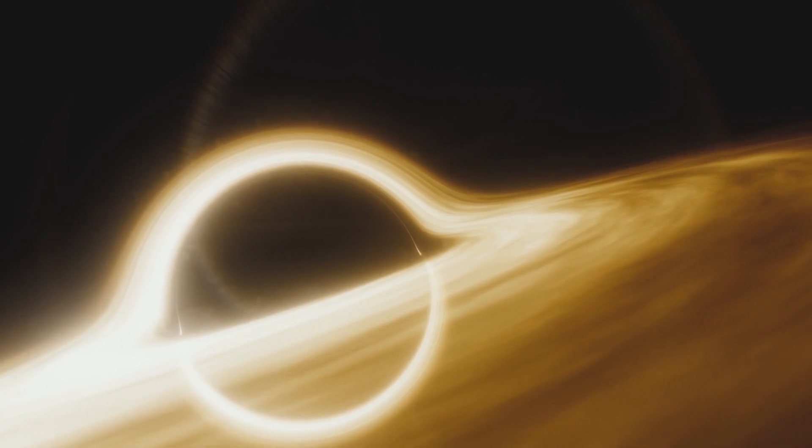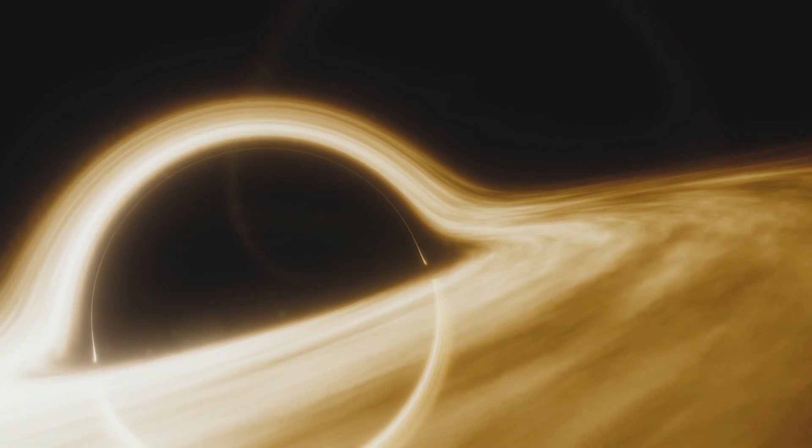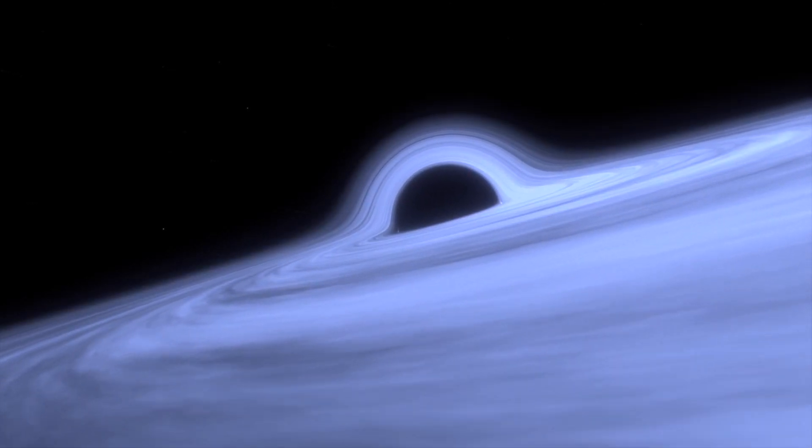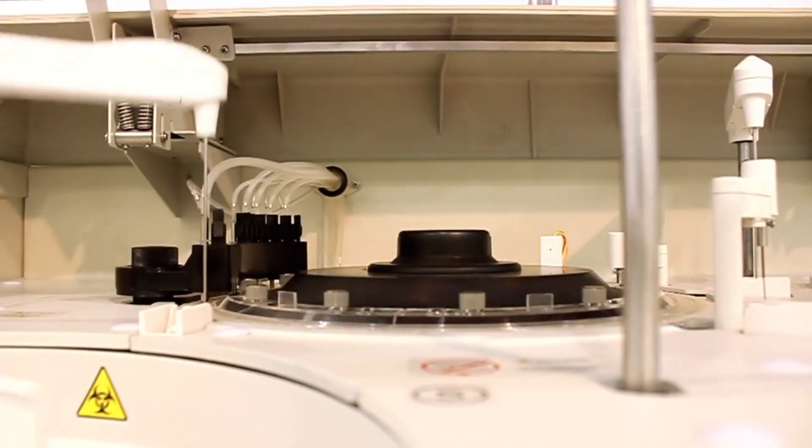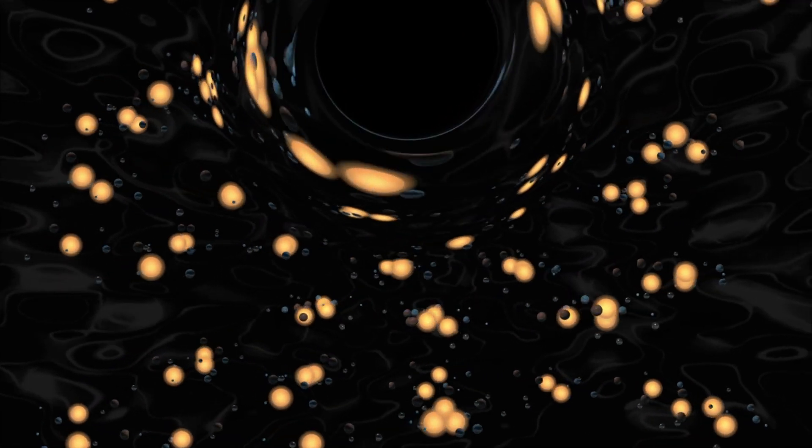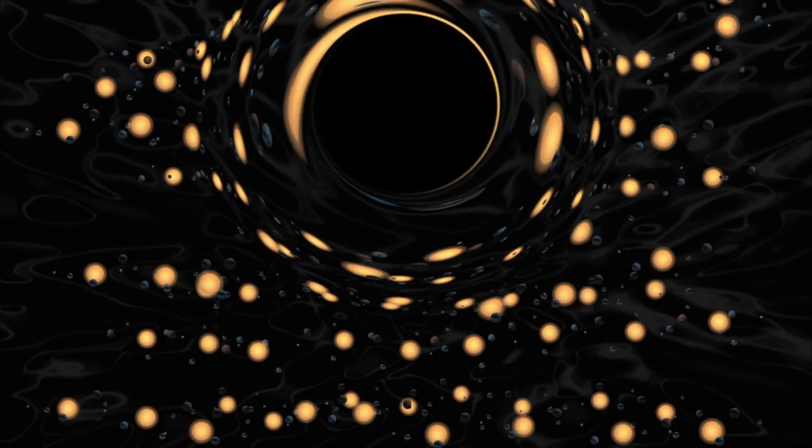The environment around the black hole in GRS 1915-105 is in a constant state of flux. The material from the companion star forms an accretion disk around the black hole. This has made GRS 1915-105 an excellent laboratory for studying accretion processes. GRS 1915-105 challenges many of our conventional understandings about black hole accretion and jet formation. The lessons learned from this system have implications for larger systems, including active galactic nuclei and the supermassive black holes at the centers of galaxies.